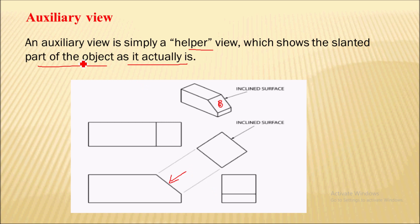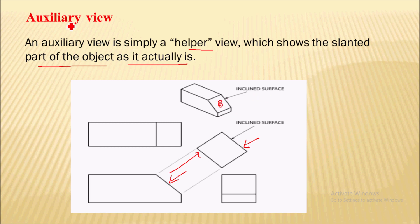For that we use the auxiliary view. We take a plane and project onto it, which gives the details about the slanted part of the object. This is called the auxiliary view.